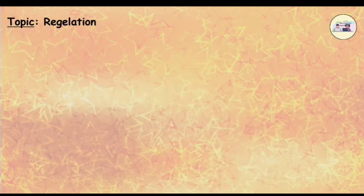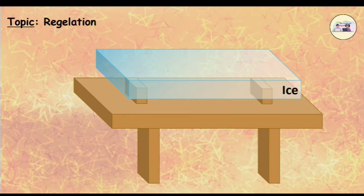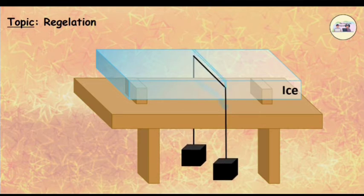Regelation. Let us consider an example to understand the concept of regelation. Put a slab of ice on a stand as shown in the figure. Hang two equal weights to the ends of a metal wire and put the wire on the slab. It is observed that the wire gradually penetrates the ice slab.